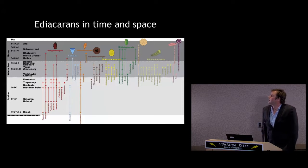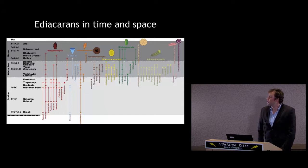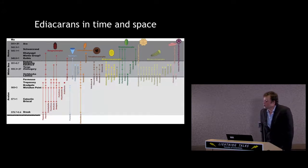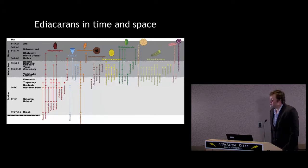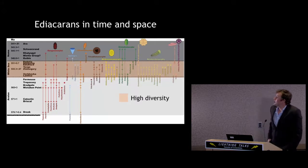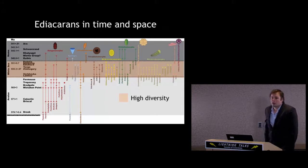In this figure, the left-hand y-axis shows time, with the base of the Cambrian at the very top and the base of the Ediacaran at the bottom. Arranged along the top and colour-coded are the various different types of Ediacaran groups that we recognise. In this middle Ediacaran period — what we call the White Sea assemblage — we have most of these groups represented in the fossil record. This is a time of very high diversity.